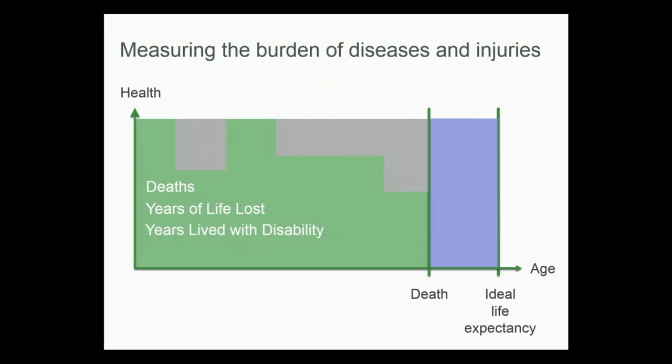Unfortunately, we don't live our entire life in perfect health. For periods of time or permanently, we suffer from disabilities. I'm nearsighted and wear glasses — my health is impacted by less than one percent. If someone suffers from chronic back pain, his or her health may be impacted by more than 30 percent. So if someone lives with chronic back pain for three years, we lose one year of healthy life. We can express the burden of disability in life years as well. So we have years of life lost to premature mortality and years of life lost to disability. We can combine those two to get disability-adjusted life years, or DALYs — the key currency we use to measure health impact around the world.